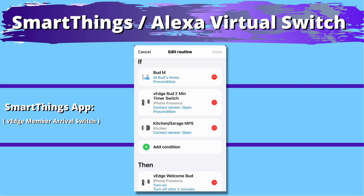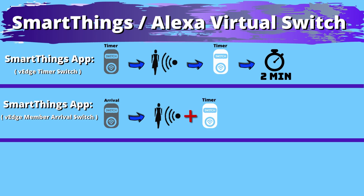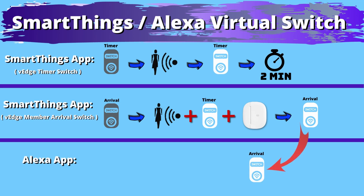The arrival switch starts in an off state. Then my presence is detected by the SmartThings Home Monitor. It also looks at the timer switch to make sure that switch is on, and then it watches to see if the contact switch is opened. If it is, then the arrival switch is turned on.